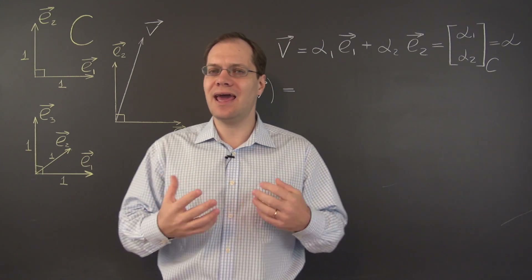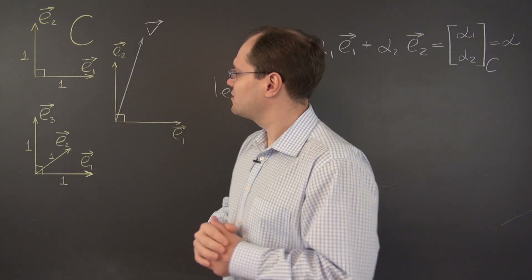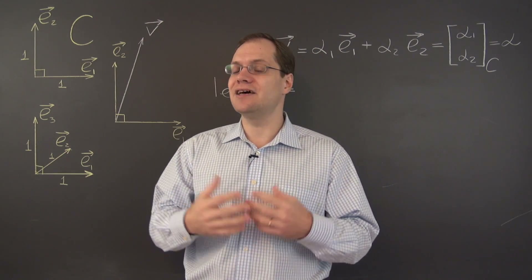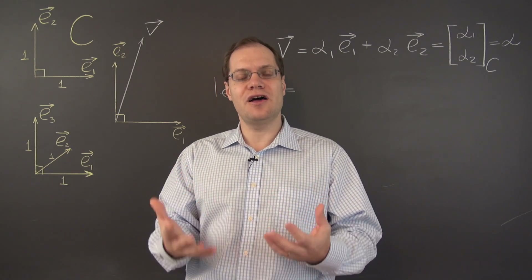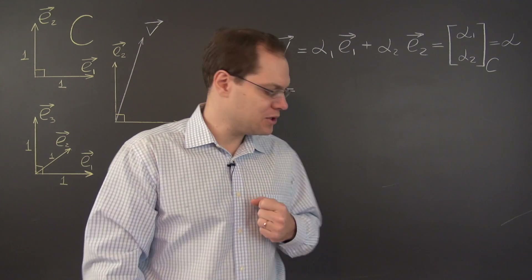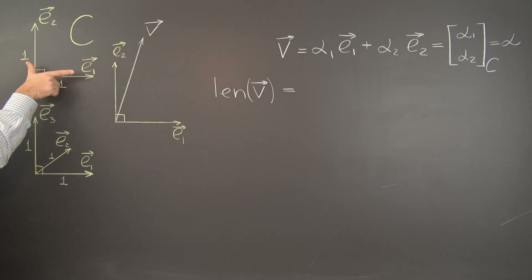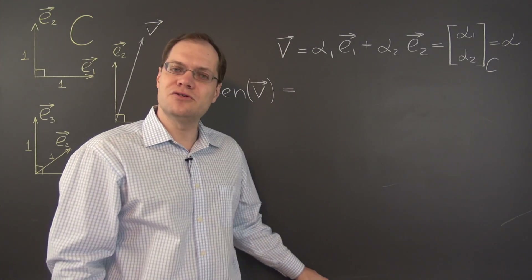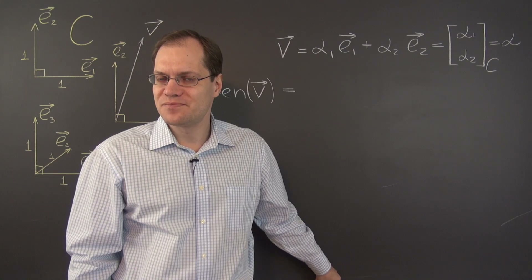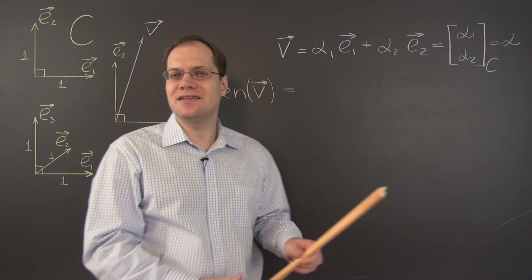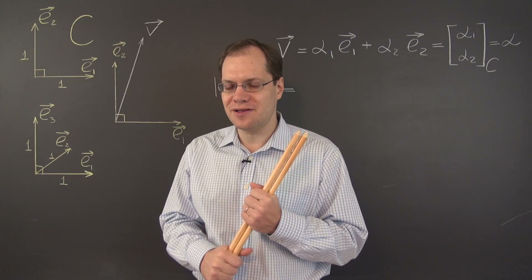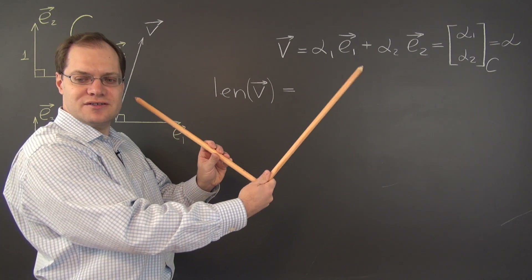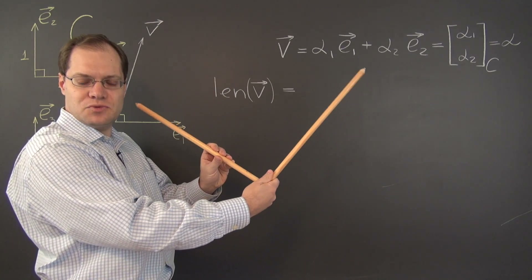Why do I keep saying a Cartesian basis instead of the Cartesian basis? That's because there are many Cartesian bases. The definition still allows for other bases that would still be called Cartesian. In two dimensions, we can rotate this basis and the vectors would still be orthogonal to each other and still be unit length. So there is a one-parameter family of Cartesian bases, parameterized by the angle by which you turn it.